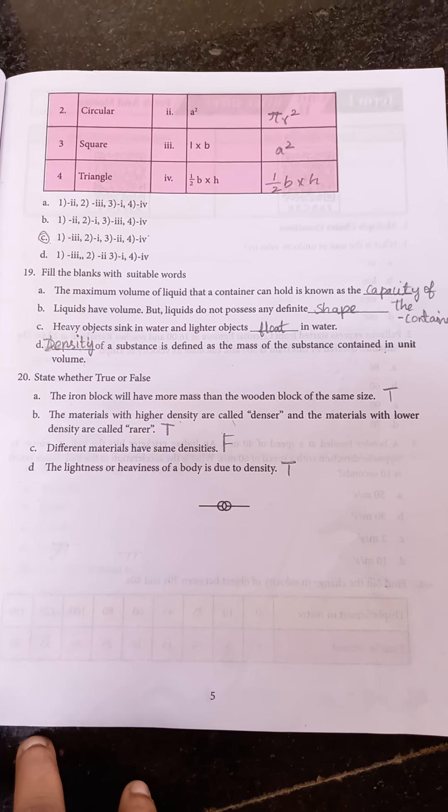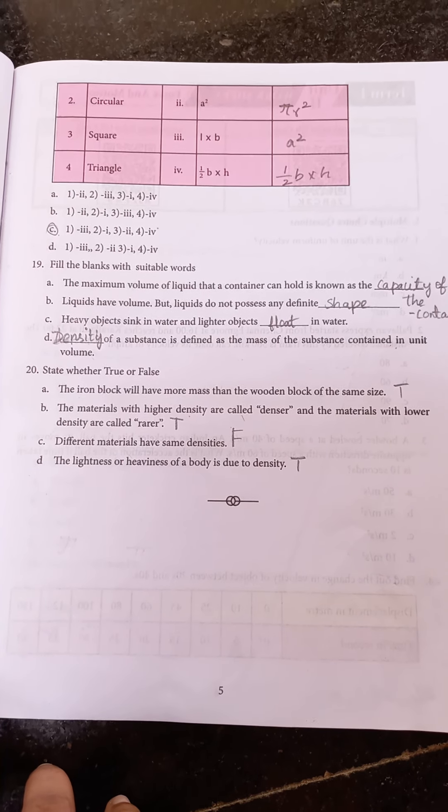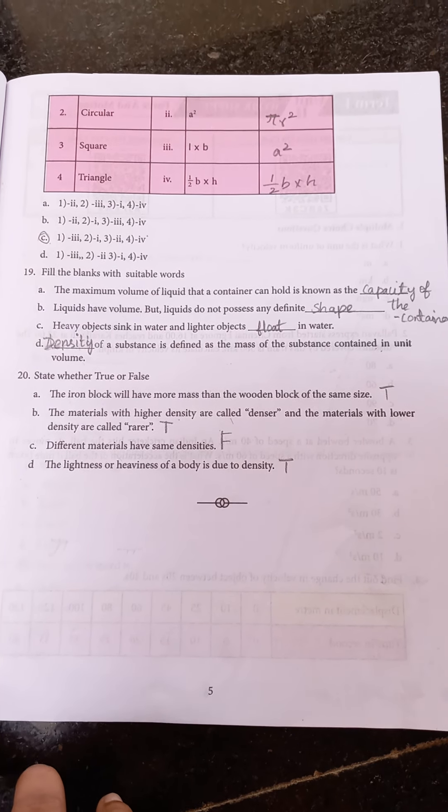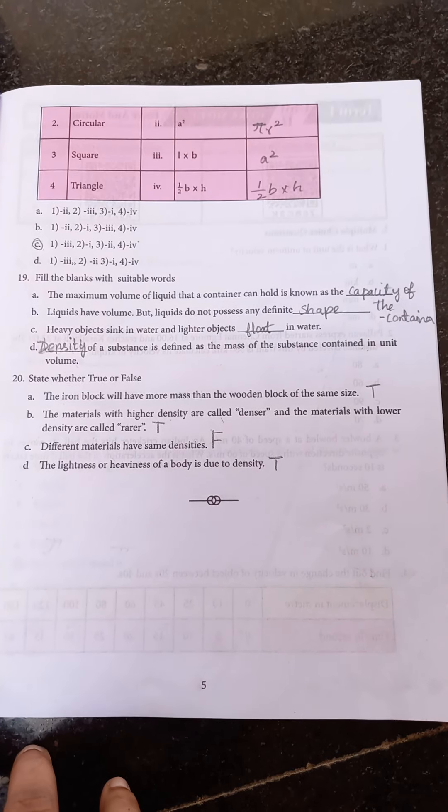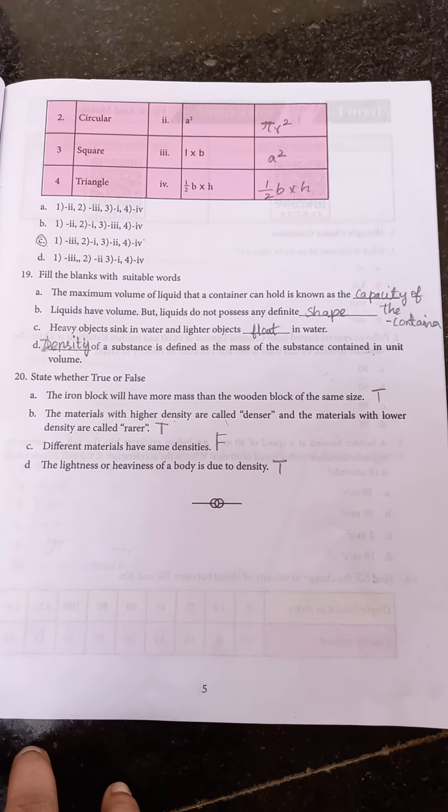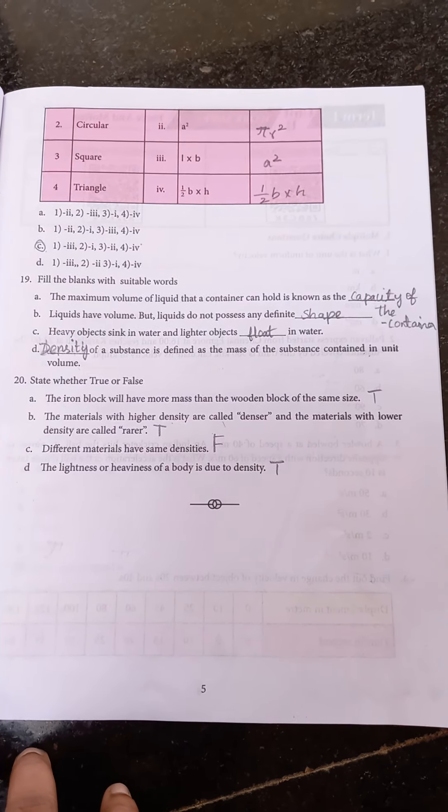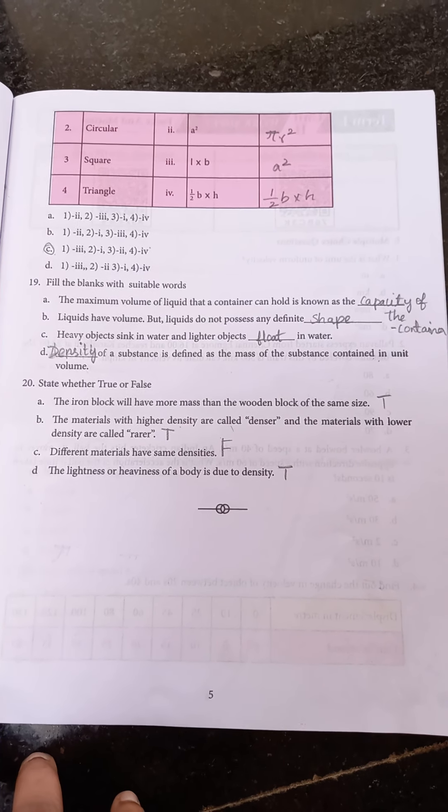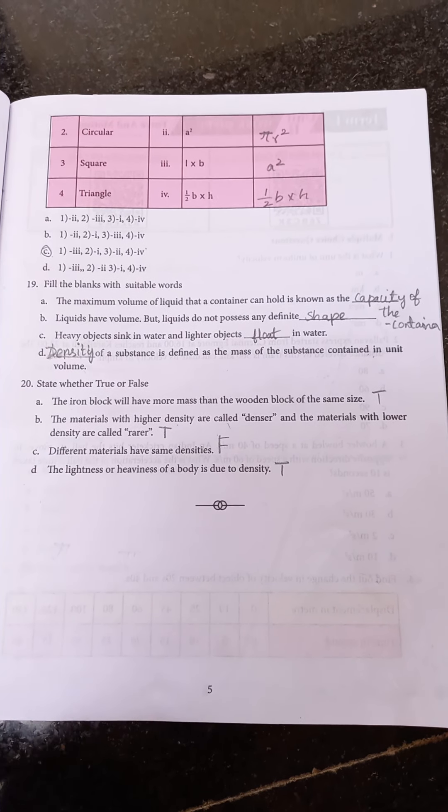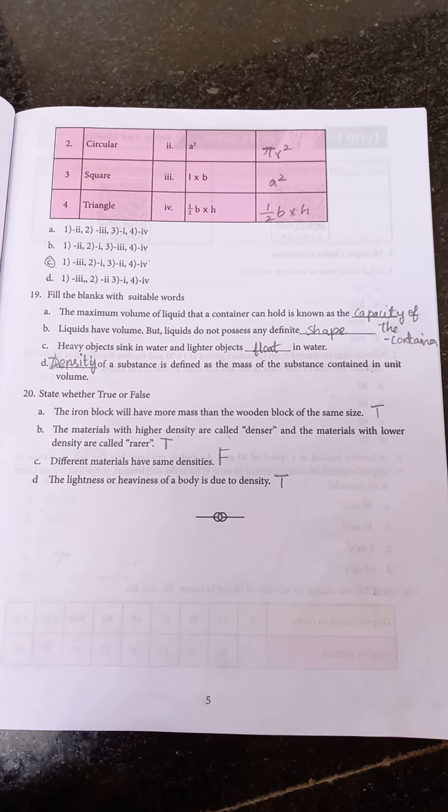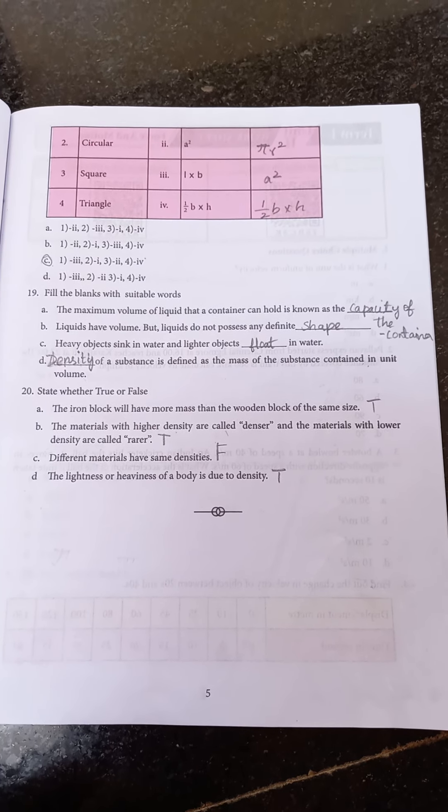Question number 20: state whether true or false. The iron block will have more mass than the wooden block of the same size, it is true. The materials with the higher density are called denser and the materials with the lower density are called rarer, it is also true. Different materials have same densities, it is false because different materials have different densities. The lightness or heaviness of a body is due to density, it is also correct, so it is true.